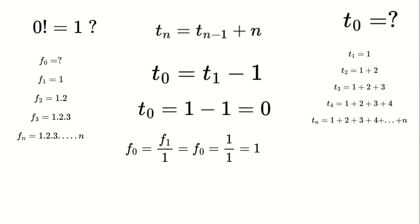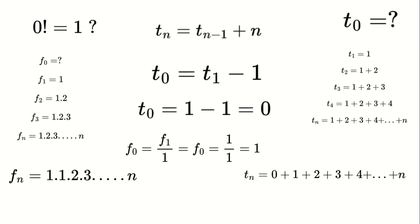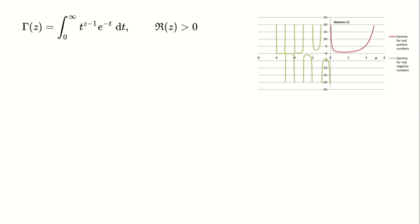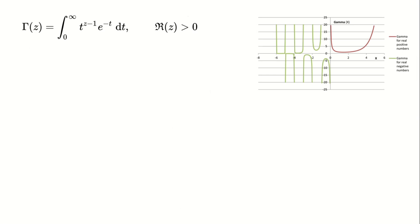Note that we never directly use 0 as an input here. Factorials and triangular numbers are defined over the set of natural numbers. To extend their domain to real or even complex numbers, mathematicians use the gamma function. The gamma function generalizes factorials, and its graph shows that factorials are undefined at negative integers, and also on complex numbers at those points.